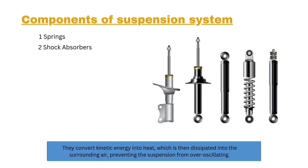Number two: shock absorbers. These control the movement of the springs by damping the oscillations — the bouncing — of the vehicle, ensuring a controlled ride. They convert kinetic energy into heat, which is then dissipated into the surrounding air, preventing the suspension from over-oscillating.